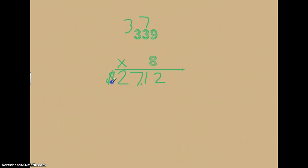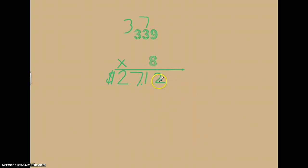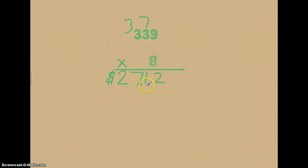Remember: to the right of the decimal is always where the cents are, and there can never be more than two digits because we just have the place for the dimes and the place for the pennies. Our product is the same — twenty-seven dollars twelve cents. So if it's easier for you to think about this as multiplying whole numbers and adding the dollar sign and decimal at the end, that's a great strategy to use as well. All right, fourth grade, now you know how to multiply money.